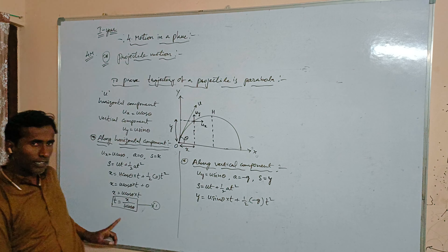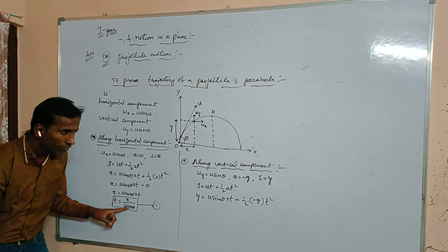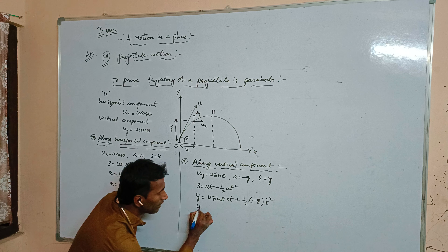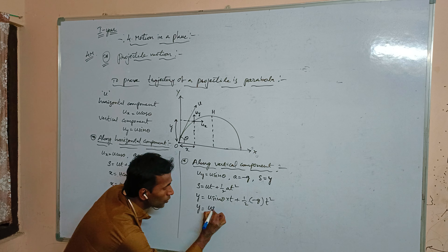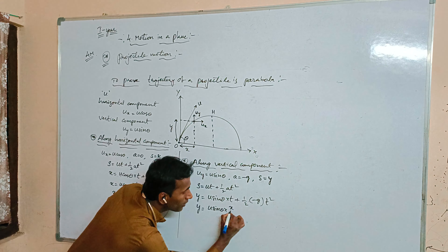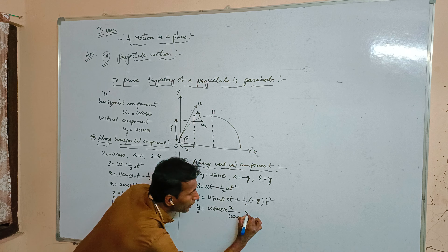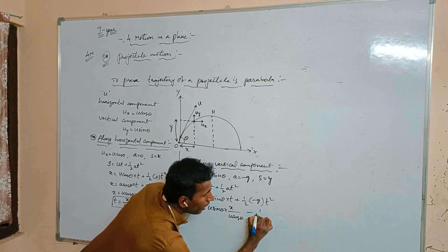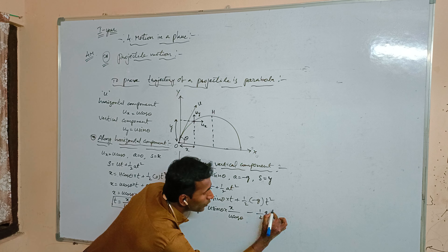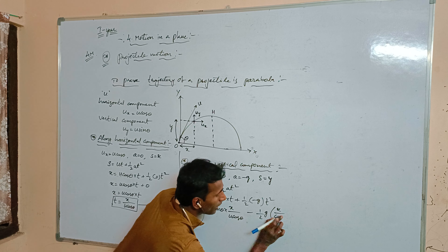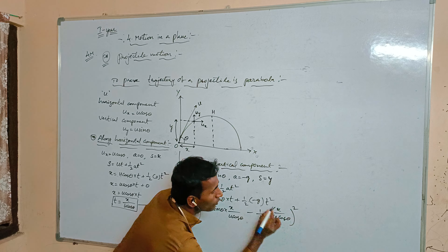From equation 1, the value of t is t = x / (u cos theta). We substitute this in place of t: y = u sin theta · (x / u cos theta) + ½ · (-g) · (x / u cos theta)².